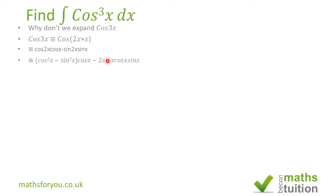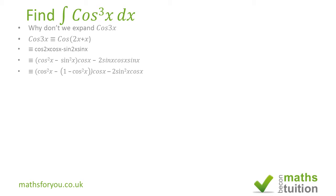Now sin(x) times sin(x) gives us sin²x, and we've got 2sin²x·cos(x) there. Now sin²x is 1 minus cos²x, because sin²x plus cos²x equals 1. So sin²x is 1 minus cos²x. Now in the expression, there's an internal bracket there to shield the sin²x, which is now 1 minus cos²x, and we've got that cos(x) up there.